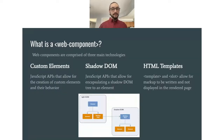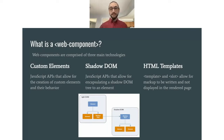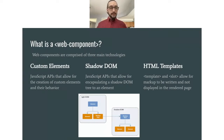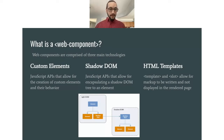Web Components are comprised of three main technologies: custom elements, the shadow DOM, and HTML templates. Custom elements are JavaScript APIs that allow for the creation of custom elements and their behavior. You can essentially write your very own HTML elements, include your logic and styling in their own separate element, and use them as you please.